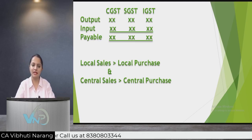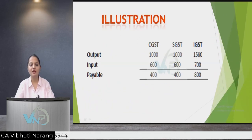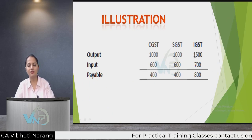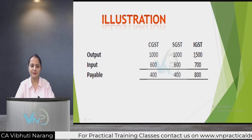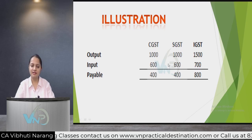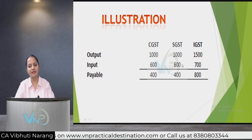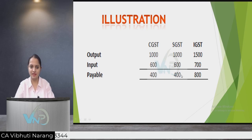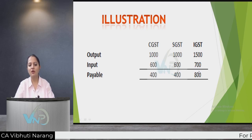For example, we have output of 1000 rupees each in CGST and SGST, and 1500 output in IGST. Input is 600 each in CGST and SGST, and IGST input is 700. So we have payable of 400 in CGST, 400 in SGST, and 800 in IGST. Since all are payable, we do not have to adjust anything.